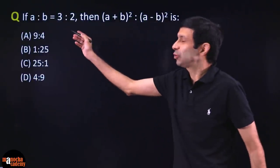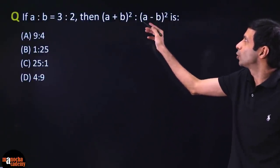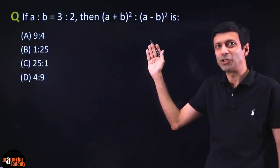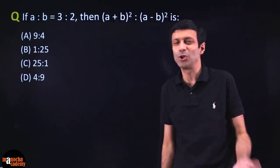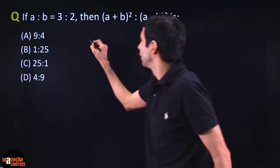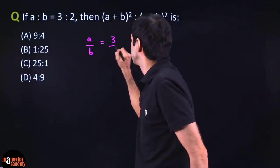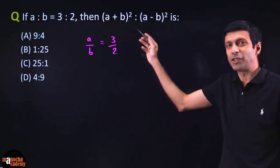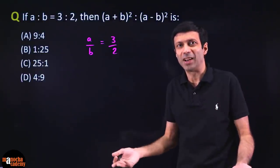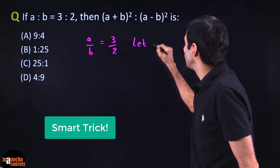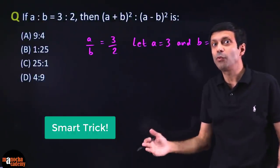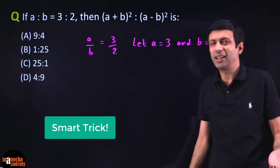Next question: if a is to b is 3 is to 2, find (a + b)² to (a − b)². You might think this is a componendo dividendo question. But here's a smart MCQ trick: since a/b = 3/2, we know a and b are 3k and 2k. We can take k = 1 and literally substitute a = 3 and b = 2, because this expression will be the same for any values of a and b in the ratio 3:2.